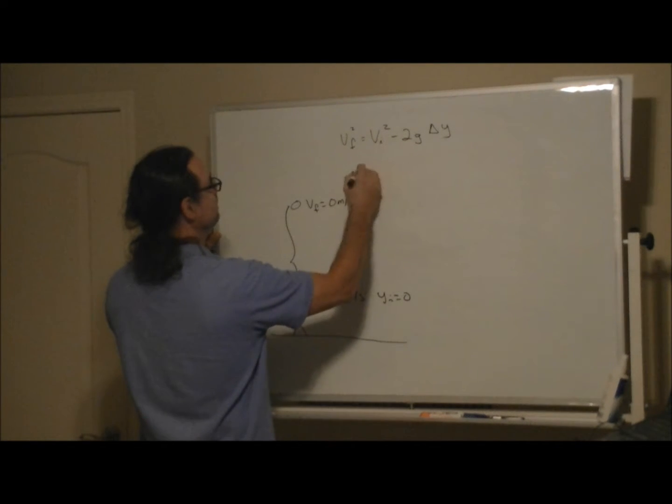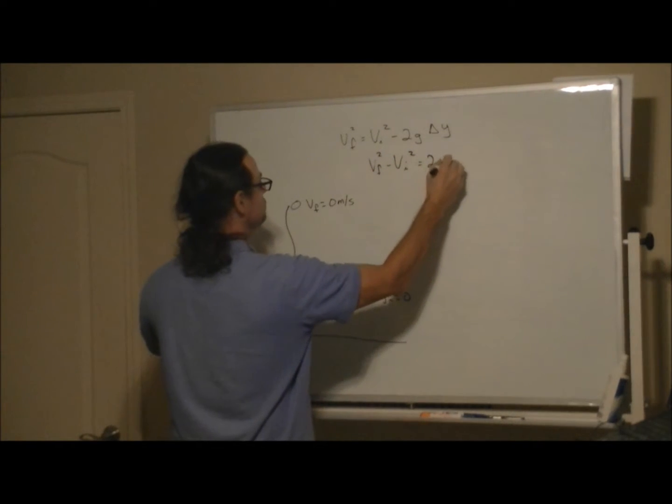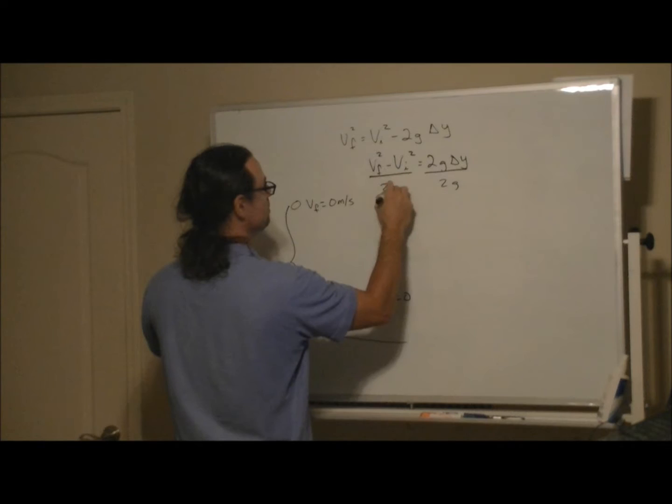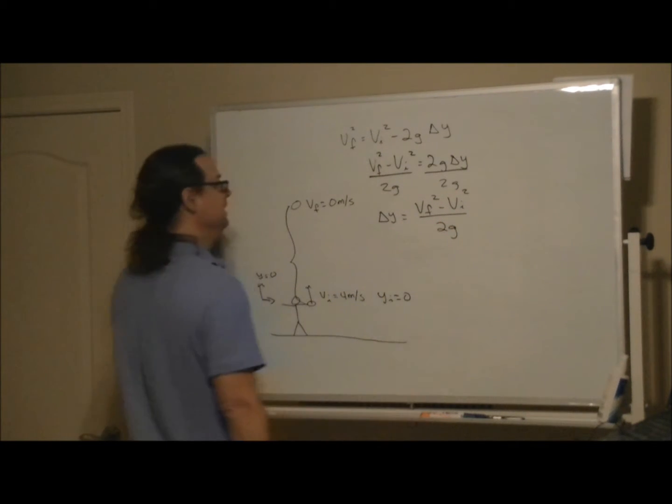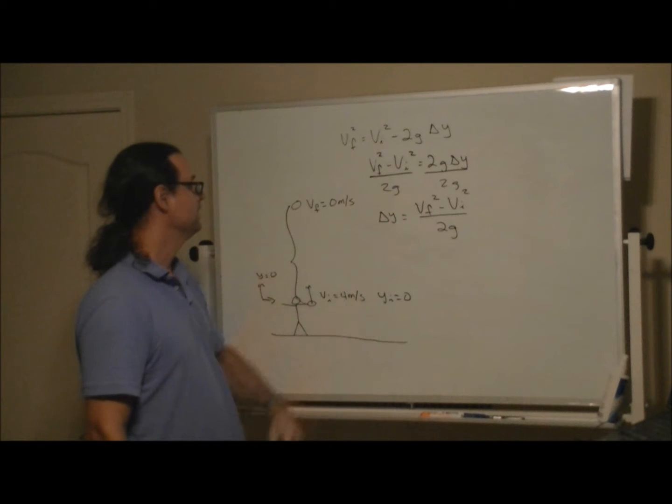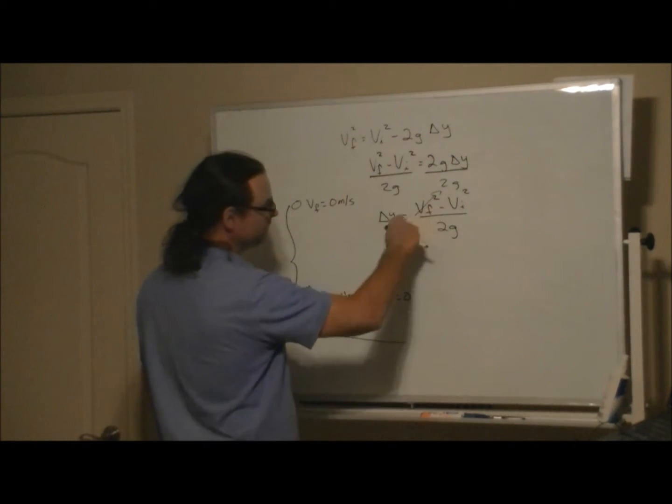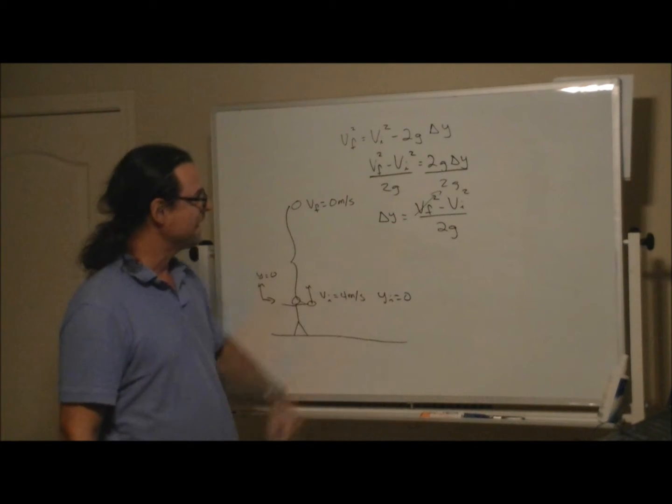Let's do a little algebra here. V final squared minus v initial squared equals minus 2g delta y. Divide both sides by 2g, so you get delta y equals v final squared minus v initial squared over 2g. Here you remember that v final is going to be zero, and you've got a minus sign running around that might not make you comfortable, but really it's just whatever the magnitude of that is on the right-hand side.